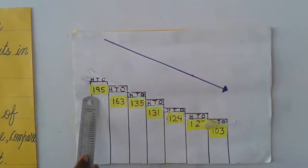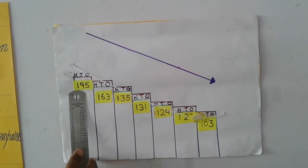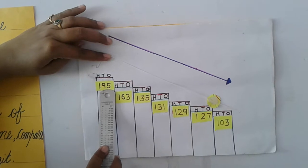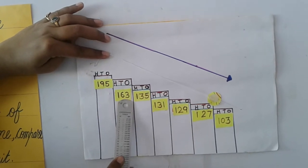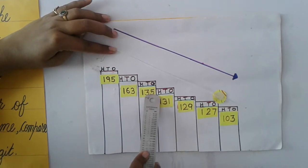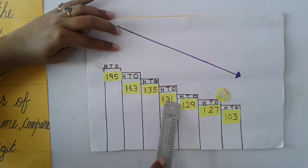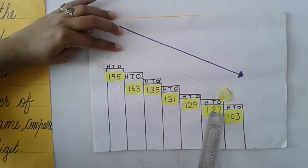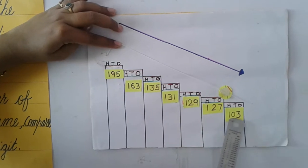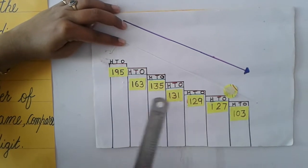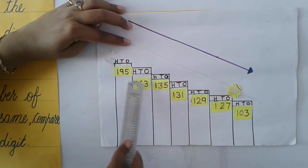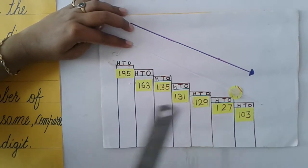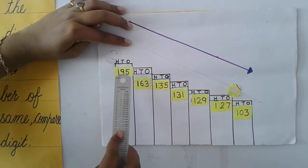Now you can see here: 195, 163, 135, 131, 129, 127, 103. The digit in the hundreds place is 1 for all of them — they are all the same. So we have to compare the tens place.